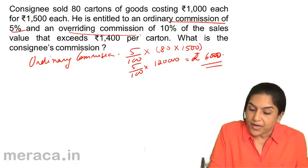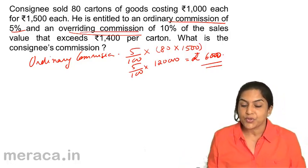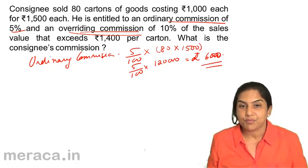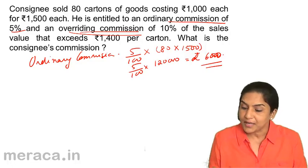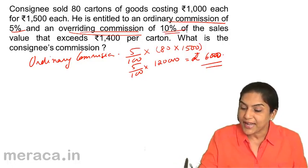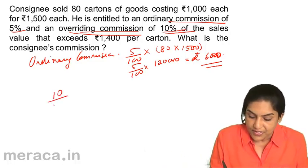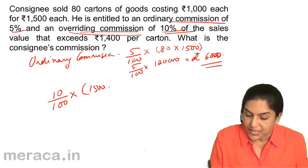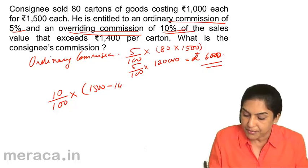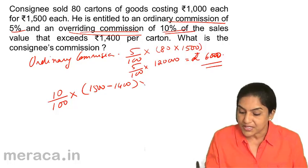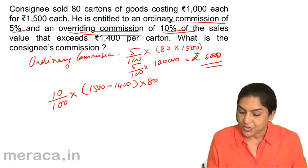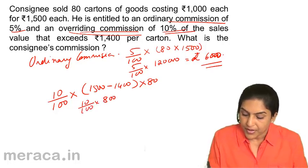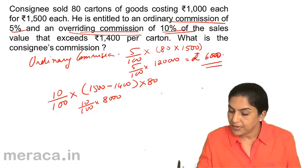The overriding commission is 10% of the sales value that exceeds 1,400 per carton. The selling price has been 1,500, which exceeds Rs. 1,400. Therefore, we have an excess price of 100 rupees per carton. So overriding commission is 10% of the value that exceeds 1,400, so 1,500 minus 1,400 gives 100 rupees per carton. We are talking about 80 cartons. So it should be 10% of 8,000, giving us 800.